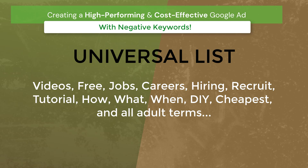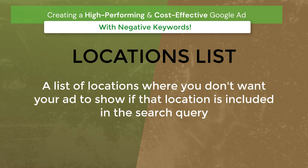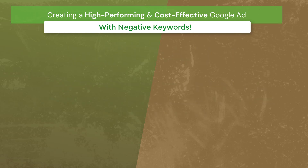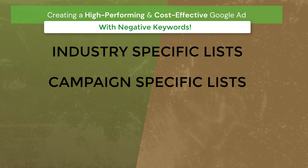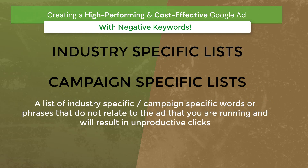If somebody's doing a search query with one of those words, you don't want your ad to show because it's really not your target audience. The next type of list has to do with locations you don't want your ad displayed in — maybe you don't ship there or don't service that location. And finally, industry-specific terms. Like in the example we talked about, if you were selling sunglasses, wine glasses would be a keyword you'd want to use — maybe that's in this group.